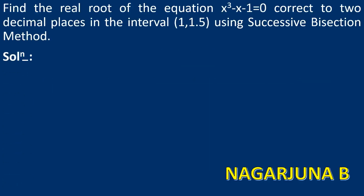Find the real root of the equation x³ - x - 1 = 0, correct to 2 decimal places in the interval [1, 1.5] using the successive bisection method. In this case they have given the equation and the interval. In few equations the interval will not be given and you need to find it yourself, but in this particular question the interval is given so we consider that interval.